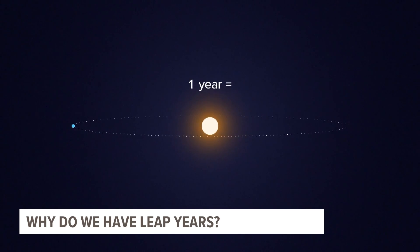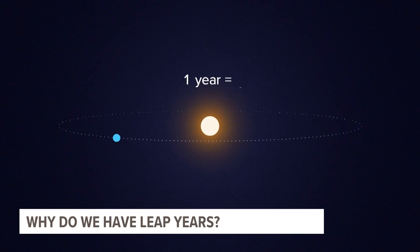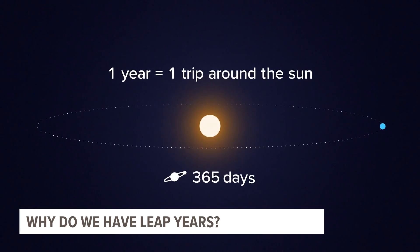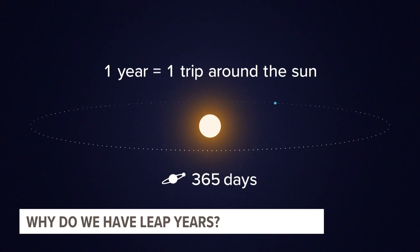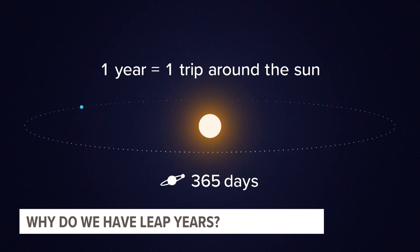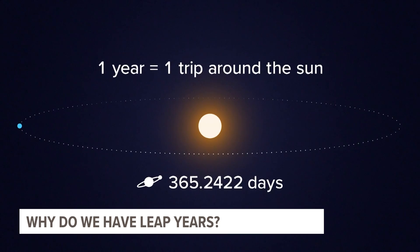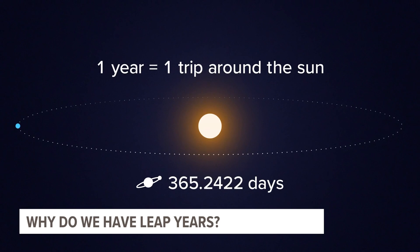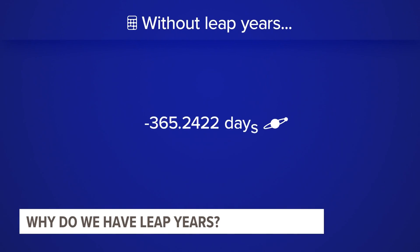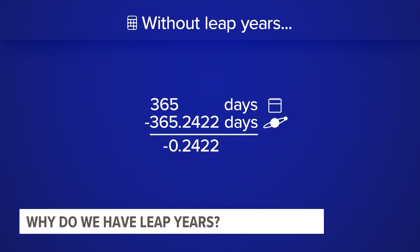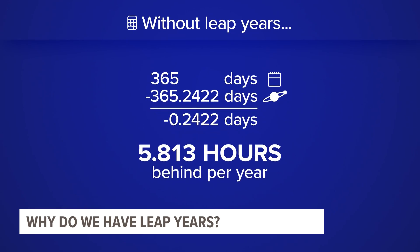The Earth takes one year to revolve around the Sun, right? Not exactly. It actually takes 365.2422 days. So when you subtract and find the difference, it's not zero — we realized we're behind about 5.8 hours each year.